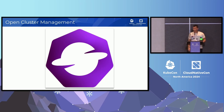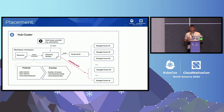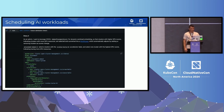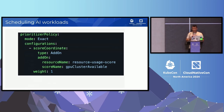We want to take open cluster management and help you schedule workloads effectively across AI-enabled compute. In our project, there exists an API called Placement. Its exact goal in life is to help you place workloads to the appropriate cluster. Who has a workload placement problem? Where are you going to put the workload? Where are the GPUs? Where are the TPUs? Where are the CPUs? We've made it even better. Did you know you could schedule AI workloads and take advantage of a placement prioritizer to schedule the workload on the appropriate cluster where their capacity is available to you?